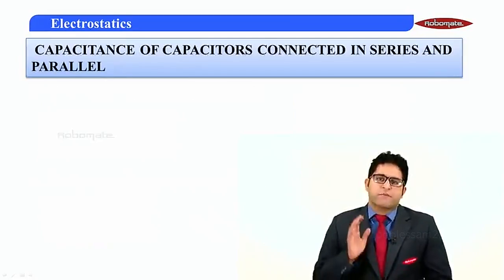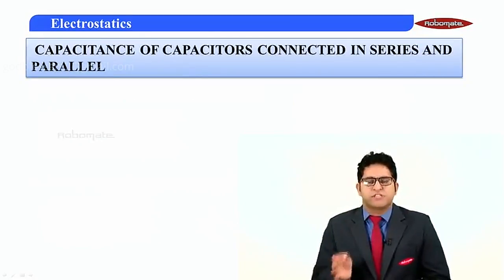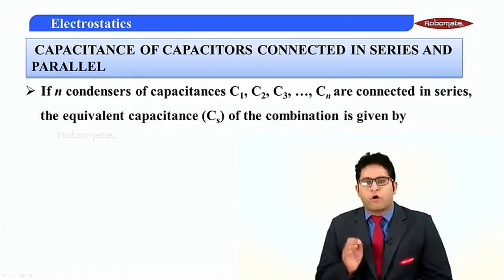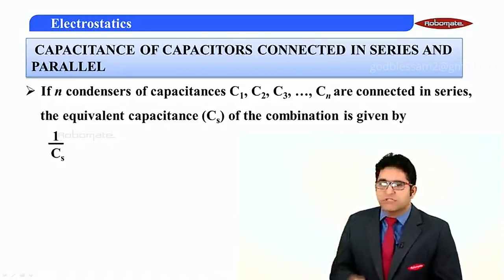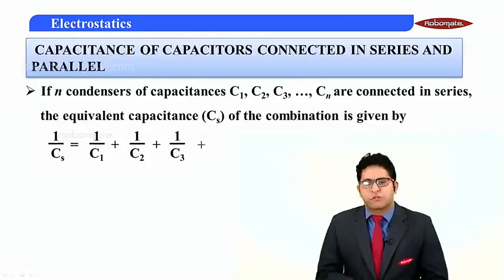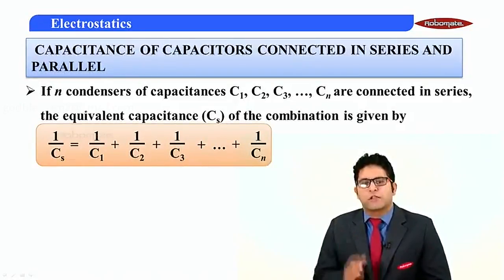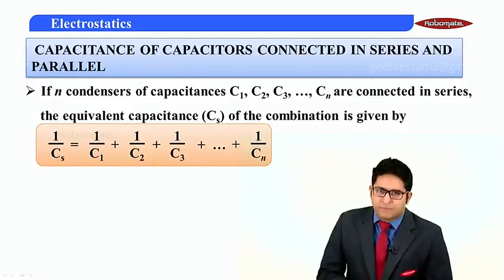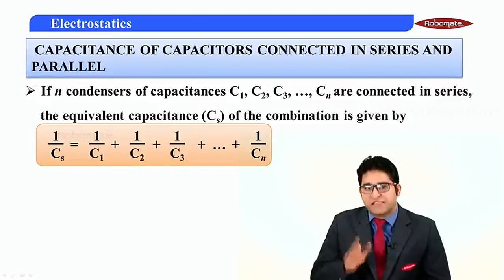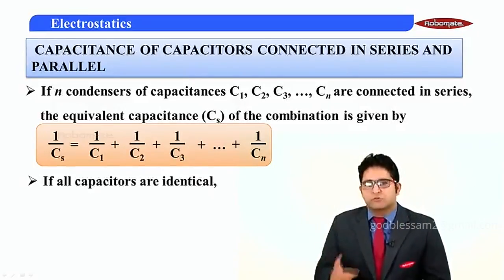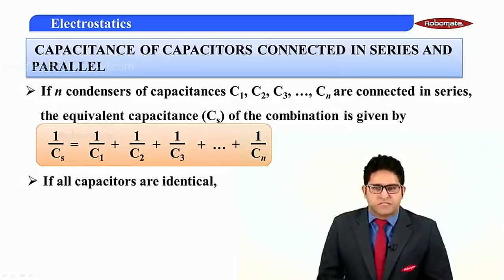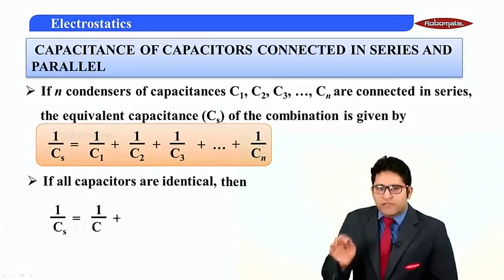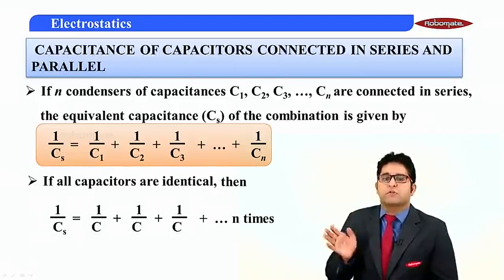Now, if we have N capacitors of capacitances C1, C2, C3, ... Cn connected in series, the equivalent capacitance Cs is given by: 1/Cs = 1/C1 + 1/C2 + 1/C3 + ... + 1/Cn. Now let us say all capacitors are identical, meaning C1 = C2 = C3 = ... = Cn = C. Then this equation becomes 1/Cs = 1/C + 1/C + 1/C, repeated N times.